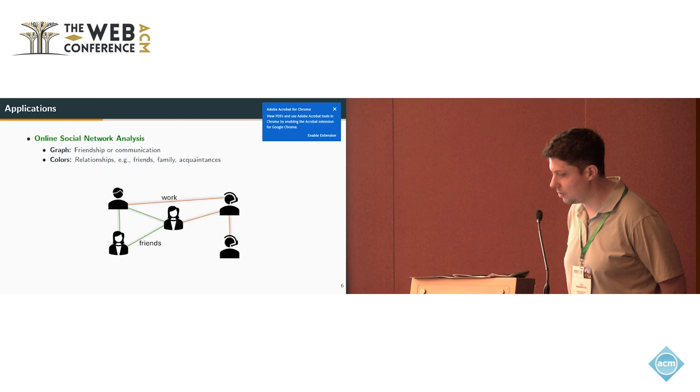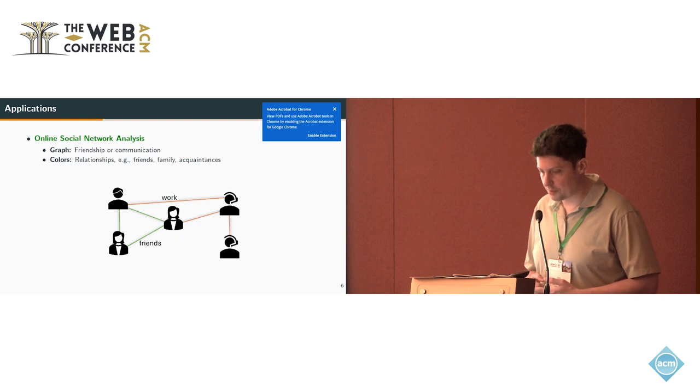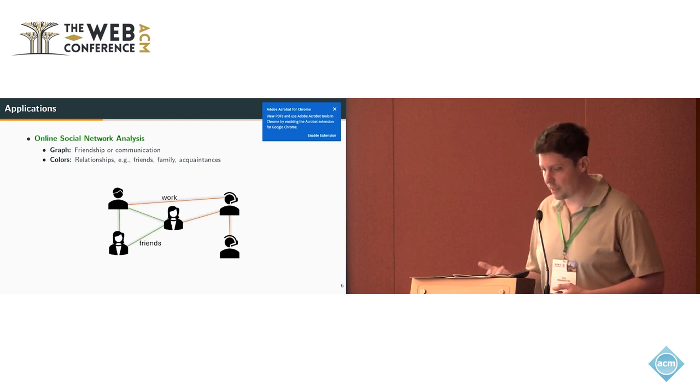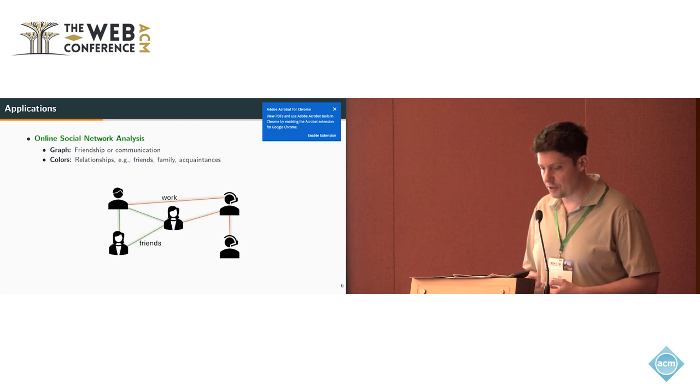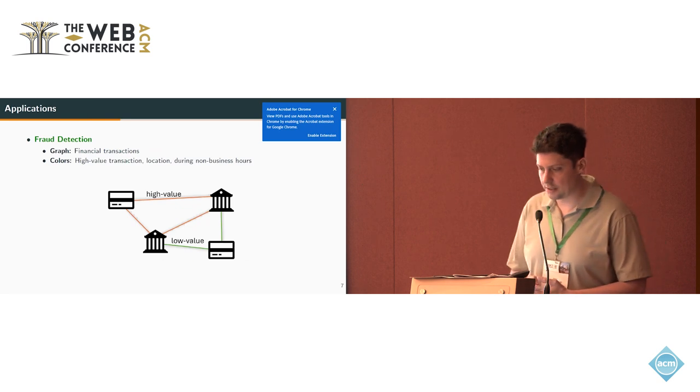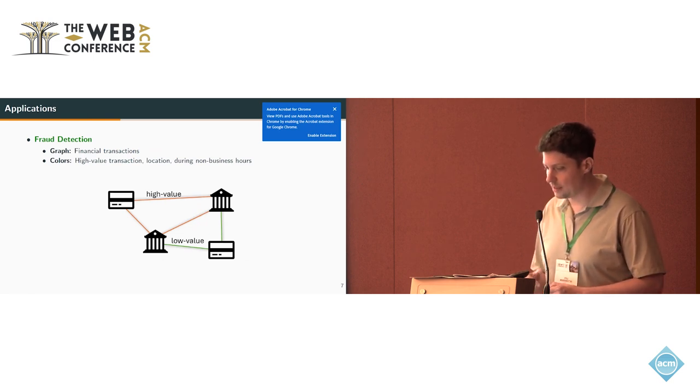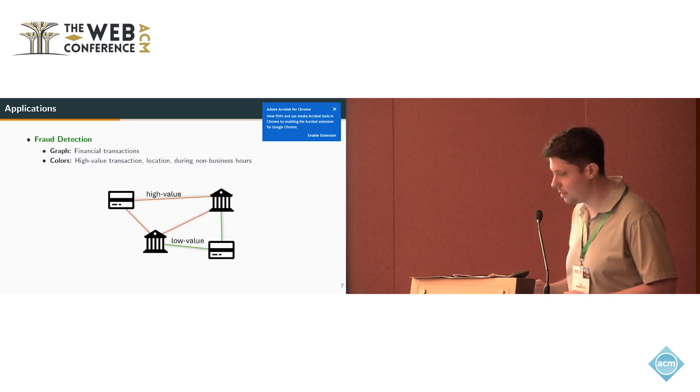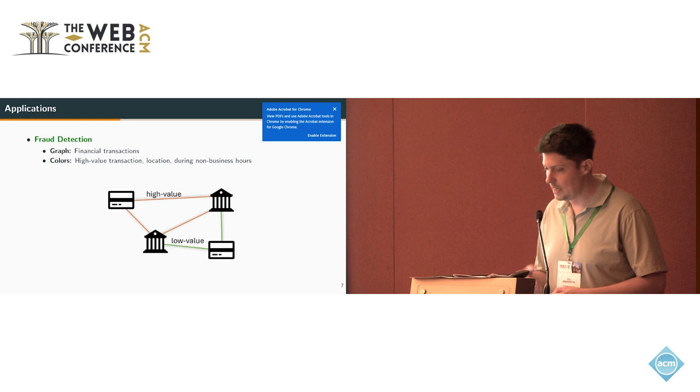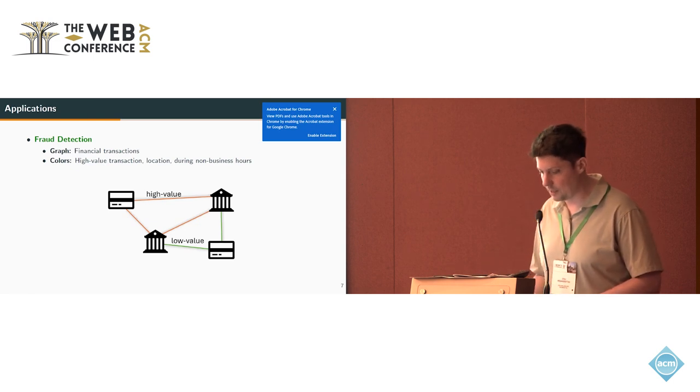Another application would be online social network analysis. Here the graph is a social network where the nodes are the users and the edges are relationships between the users. The colors of the edges represent, for example, if it's a friendship relationship, family, or a work relationship. Finally, we have the application of fraud detection where the nodes represent financial institutions or customers, and the colors of the edges represent high-value transactions, suspicious locations, or transactions during non-business hours. Finding a dense subgraph with a lot of these suspicious attributes might lead to identifying some fraudster network.